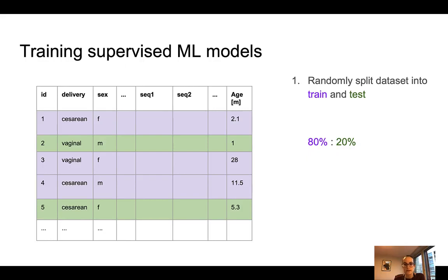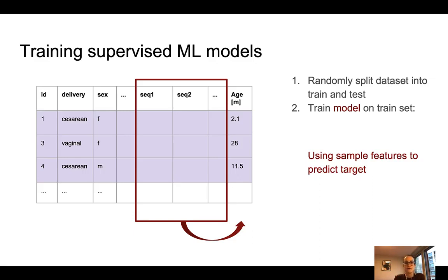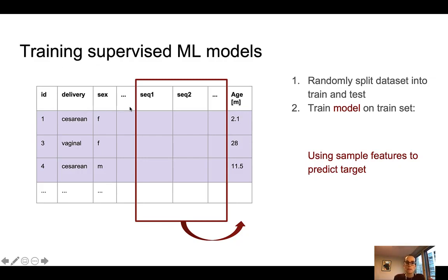So now we split our data into a train and a test set. In the next step, we select the train set and fit our model to it. Before we do that, we want to select the features which the model considers. You are free to choose, based on your use case, whether you only want to use features that reflect the microbial composition of the samples, or whether you would also like to include some metadata information.